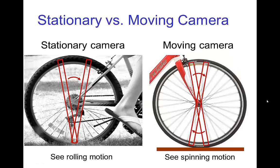The stationary camera sees rolling, whereas a moving camera tracking the wheel sees the spinning of the wheel instead of the rolling. This is worth emphasizing because motion often looks different depending on what the camera is doing and how it is moving.